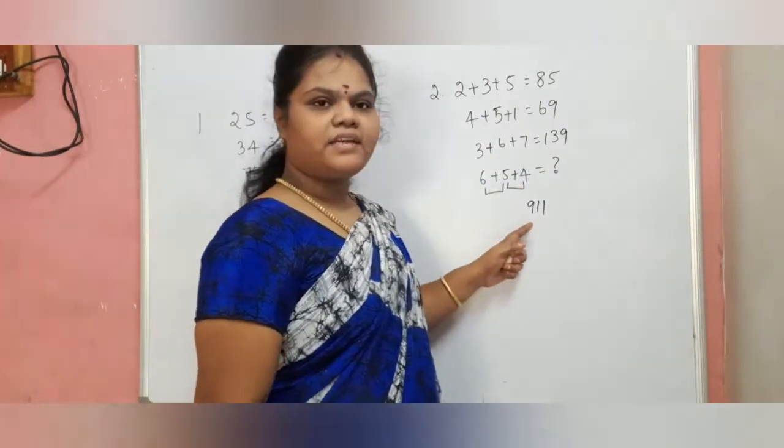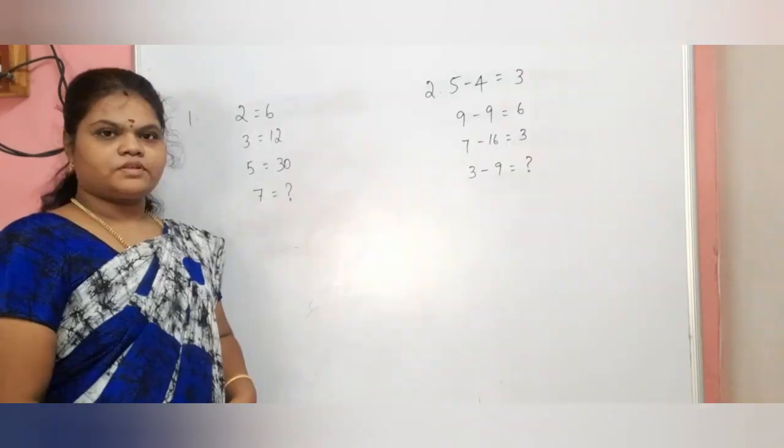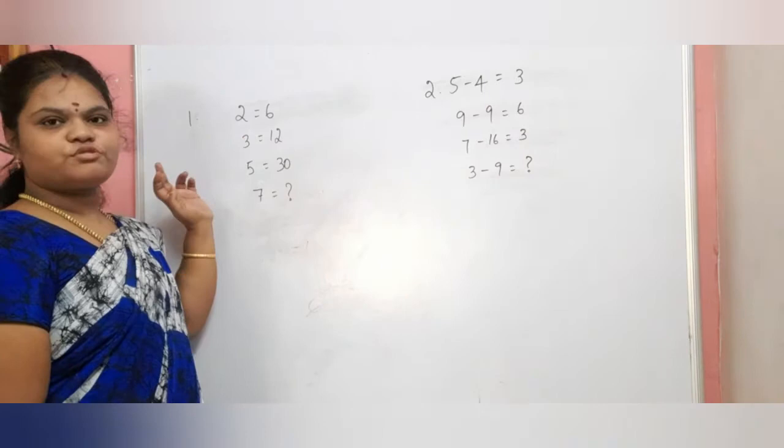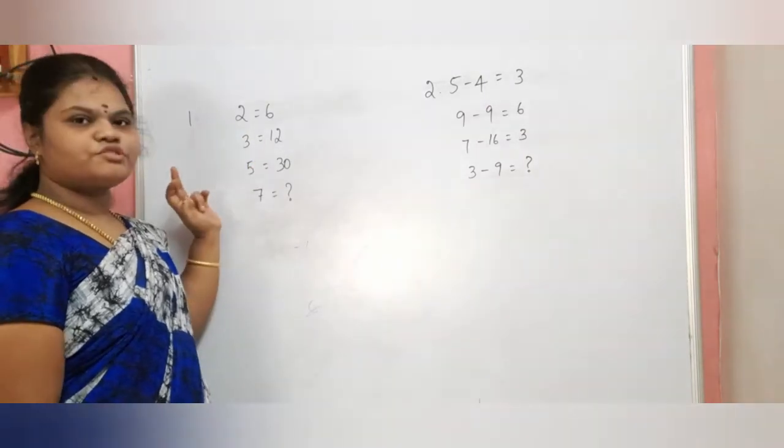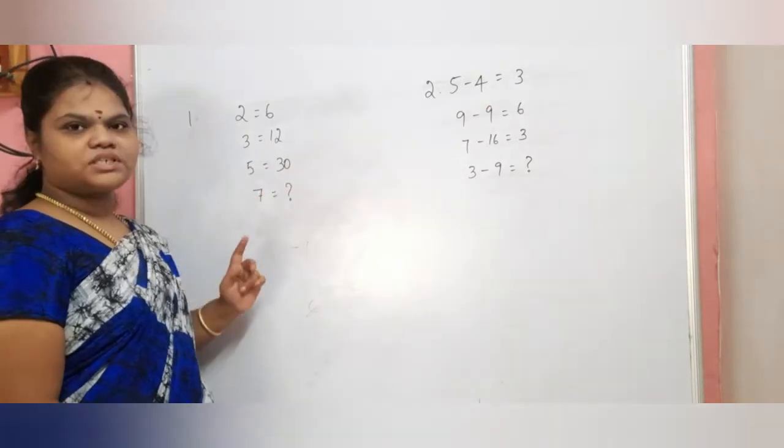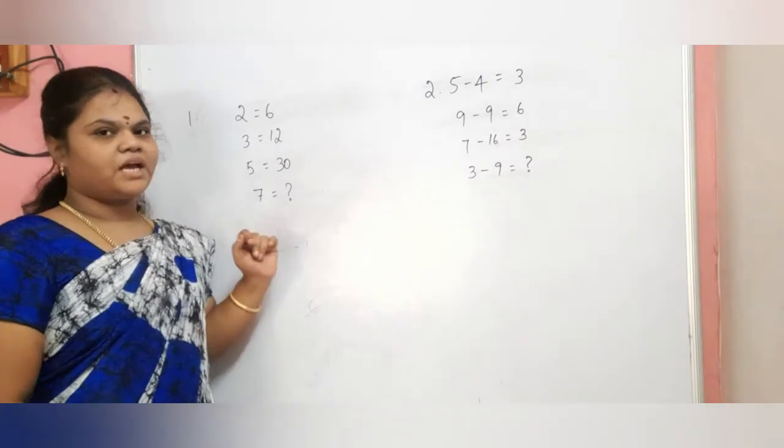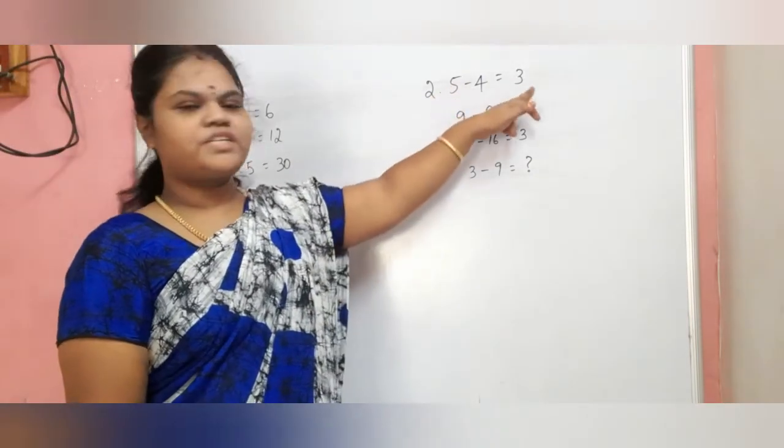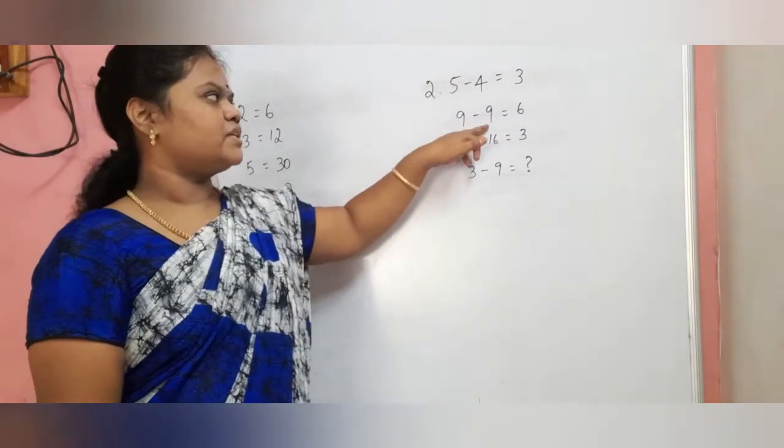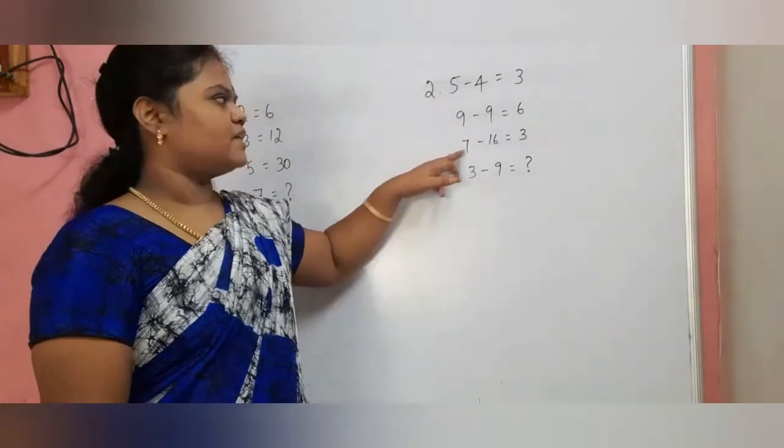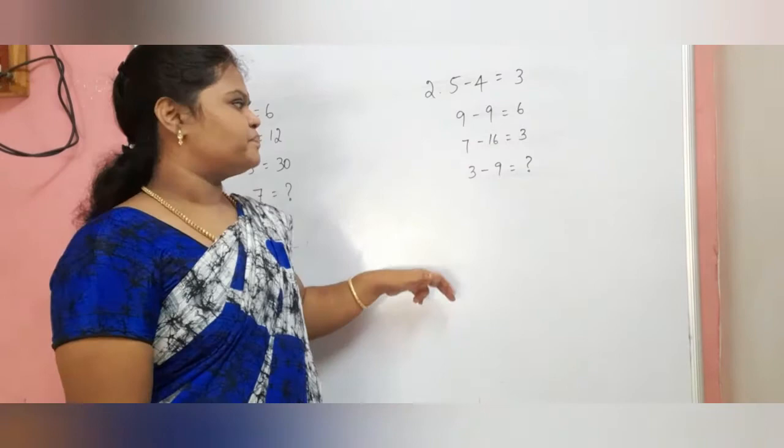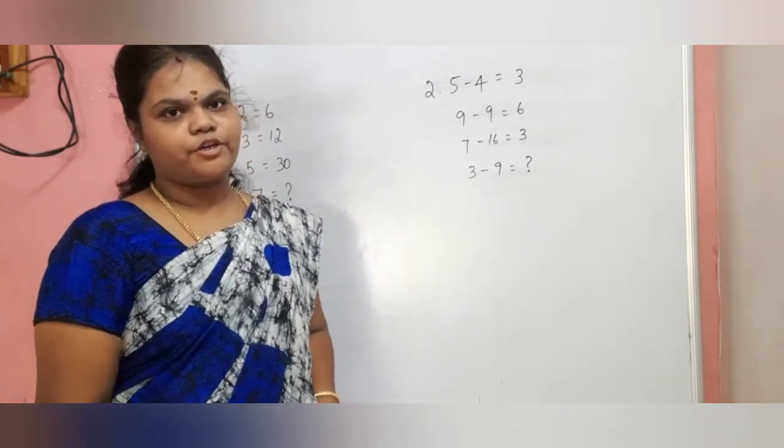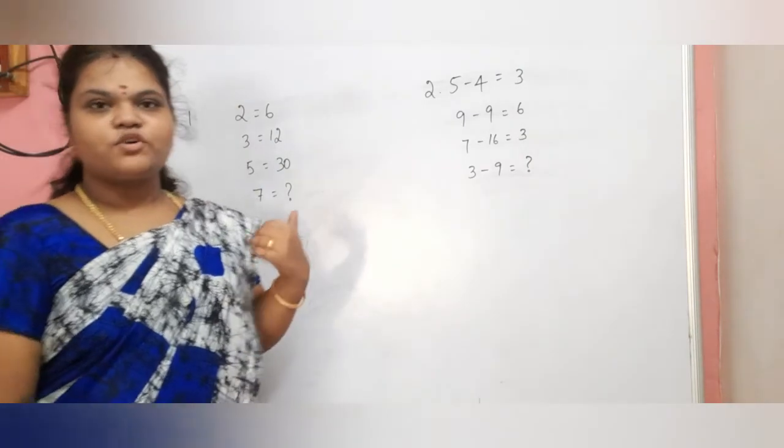Next puzzle: 2 equal to 6, 3 equal to 12, 5 equal to 13, 7 equal to what? Next question: 5 minus 4 is 3, 9 minus 9 is 6, 7 minus 16 is 3, 3 minus 9 equals what? Find the answer and comment.